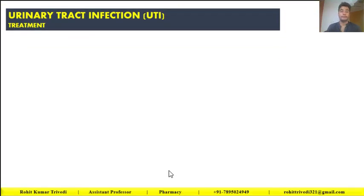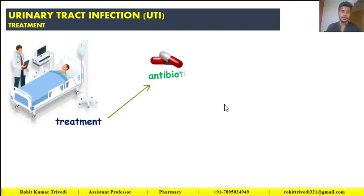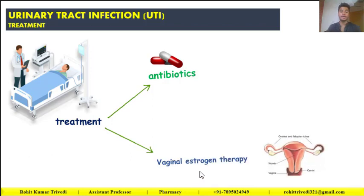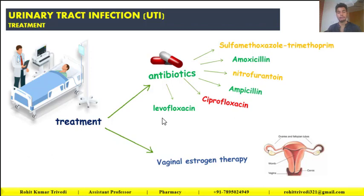Moving further to treatment — what medicines and pharmaceutical agents are used for urinary tract infection? Antibiotics are very common and can be used for males and females. These include sulfonamide-trimethoprim combination, amoxicillin, nitrofurantoin, ciprofloxacin, and levofloxacin — all used against bacteria and microorganisms. The second broad category is vaginal estrogen therapy, which is specific for females only and not applicable for males.